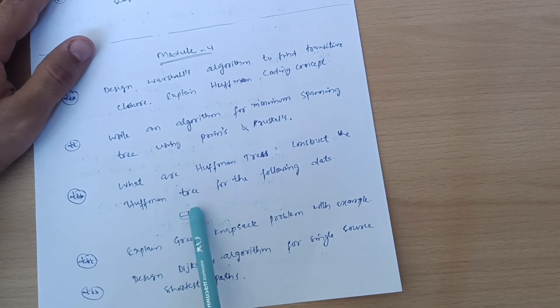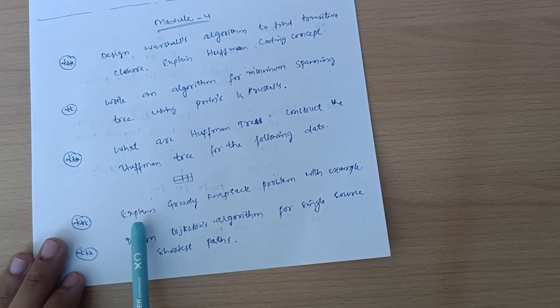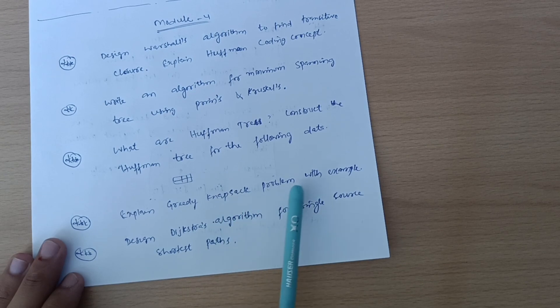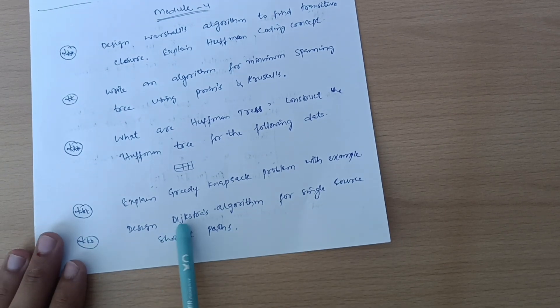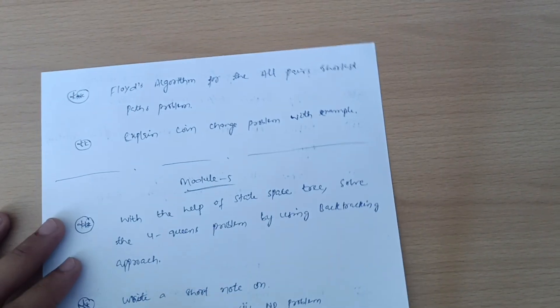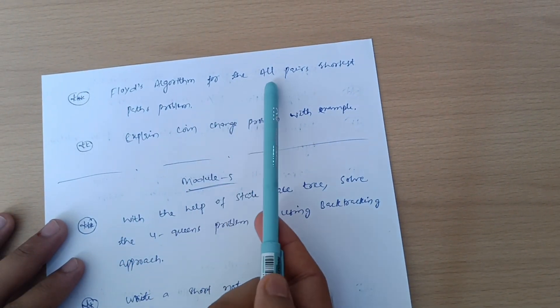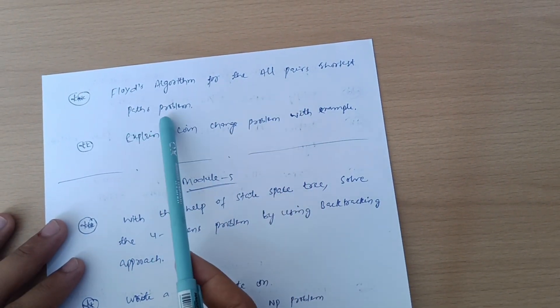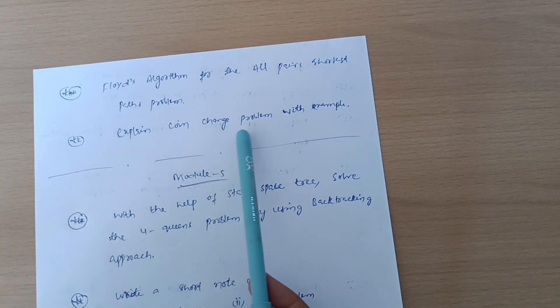Explain greedy knapsack problem with example, design Dijkstra's algorithm for single source shortest paths, Floyd's algorithm for all pairs shortest paths problem, and explain coin change problem with example. This is all about Module 4.